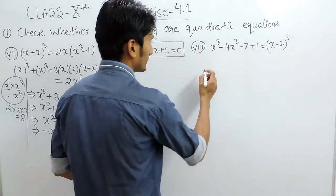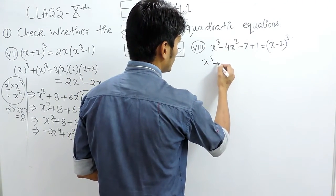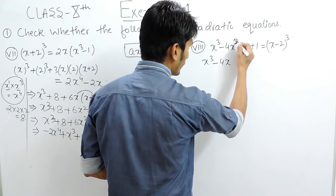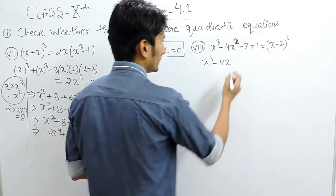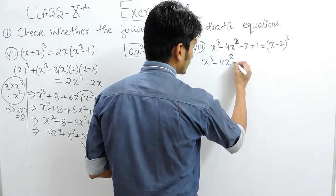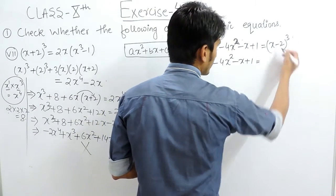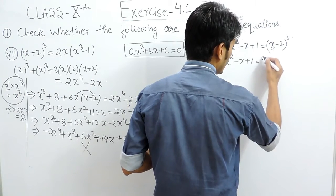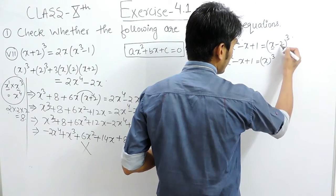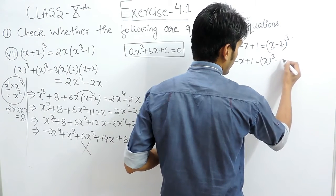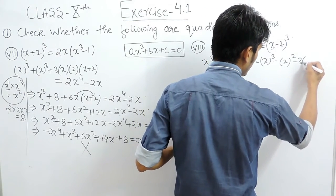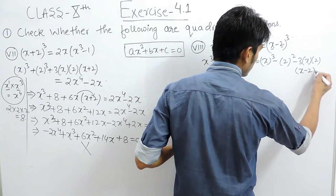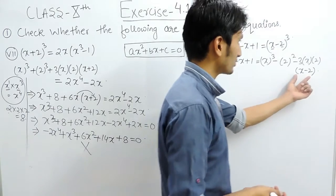Similarly, you have to solve this also. This is x cube minus 4x, this must be 4x square. This is 4x square, this is x, this is 1. And this when solved is again (a − b) whole square, and this equals (a − b) whole cube, which equals a³ − b³ − 3ab(a − b).